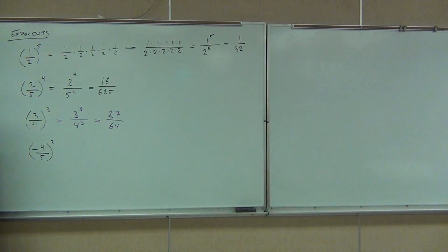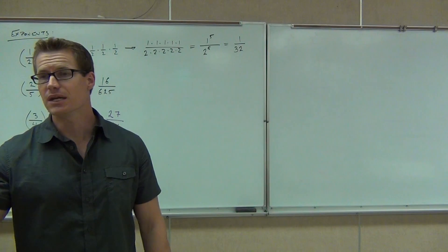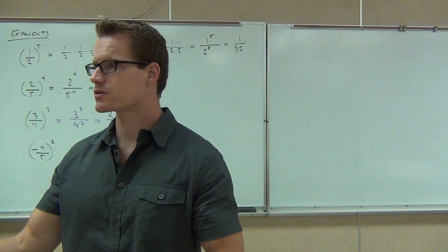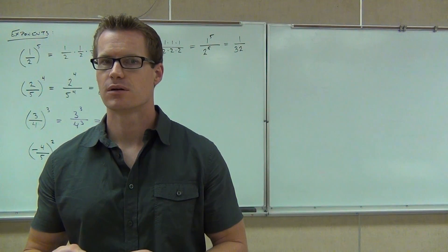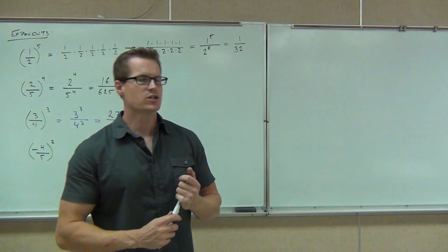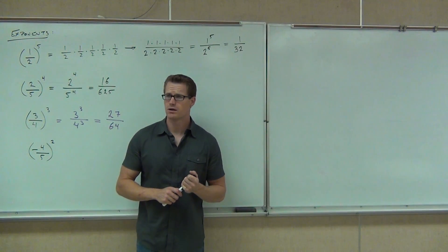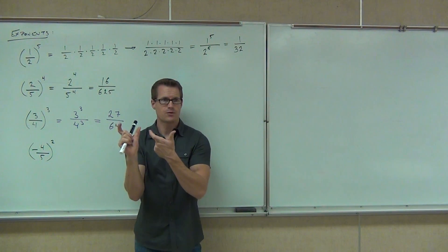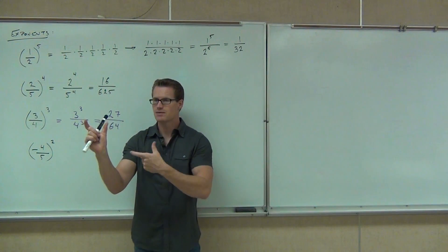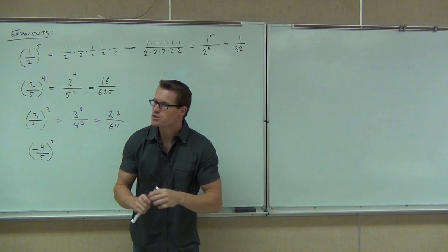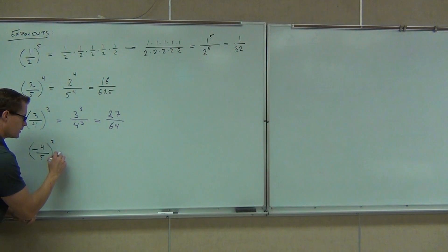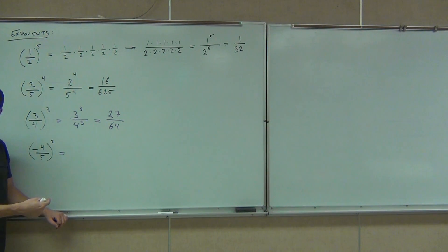Now, how about negative four-fifths to the second power? What does that actually mean? Negative four-fifths times negative four-fifths. What's a negative times a negative? Positive. What's going to happen every time you square a number, no matter whether it's a fraction or not? It's positive. If you take a positive times itself you get a positive; if you take a negative times itself — a negative times a negative — that also gives you a positive. So we know automatically, if we have a negative inside our parentheses and we're squaring it, our answer is going to be positive. It's very useful to find out the sign of your answer before you actually do the math.